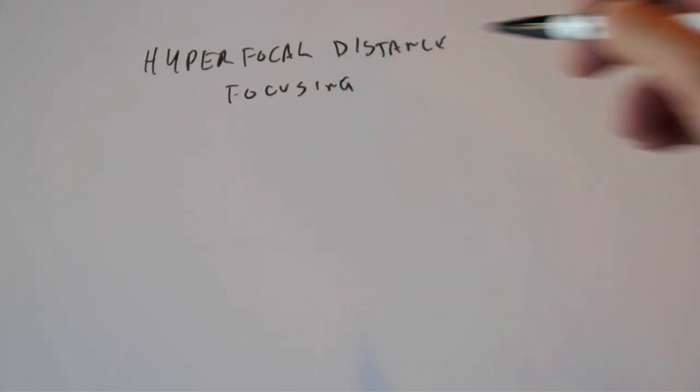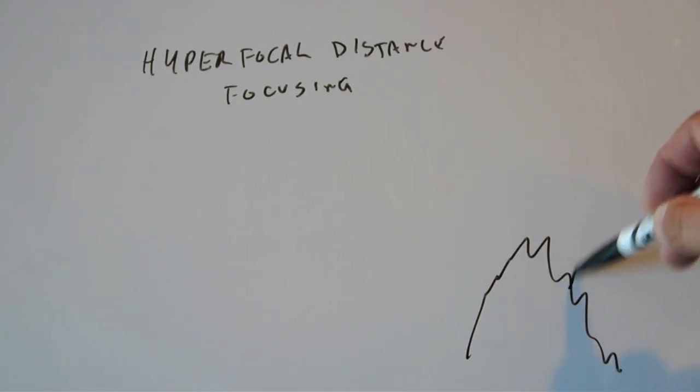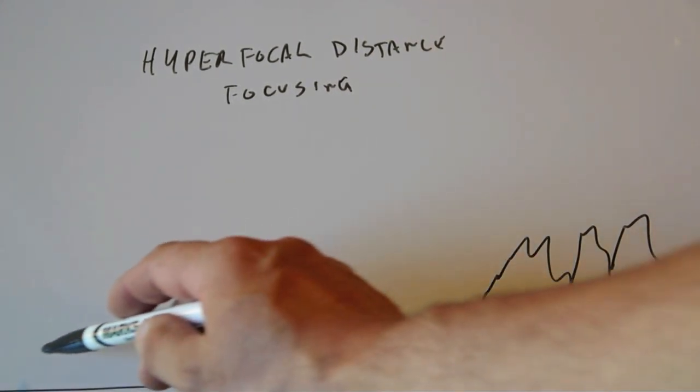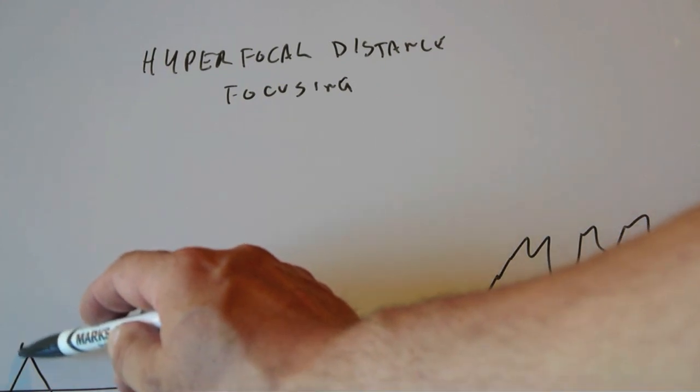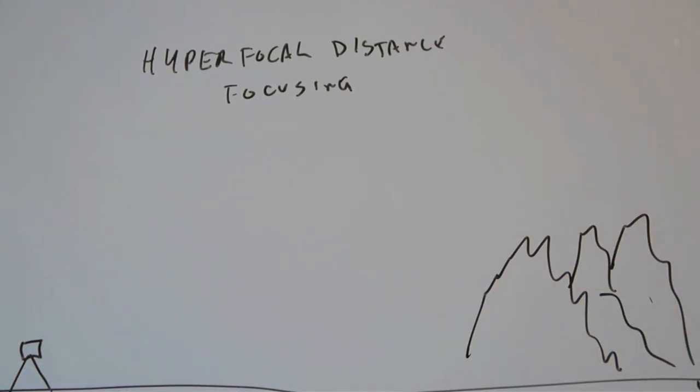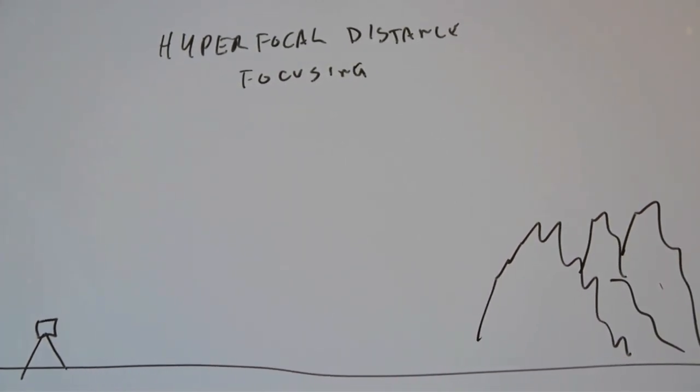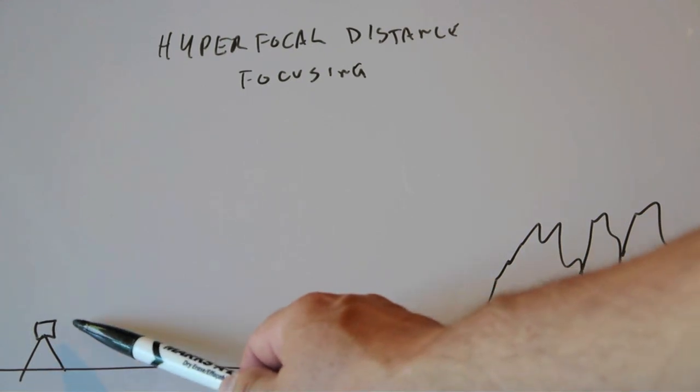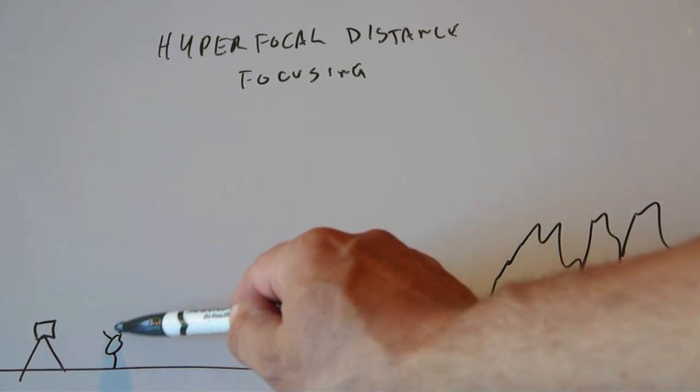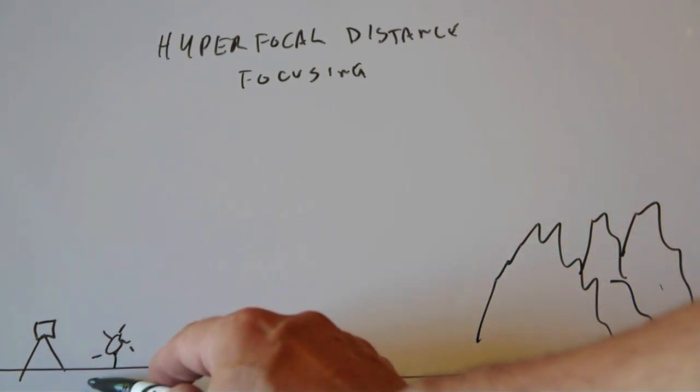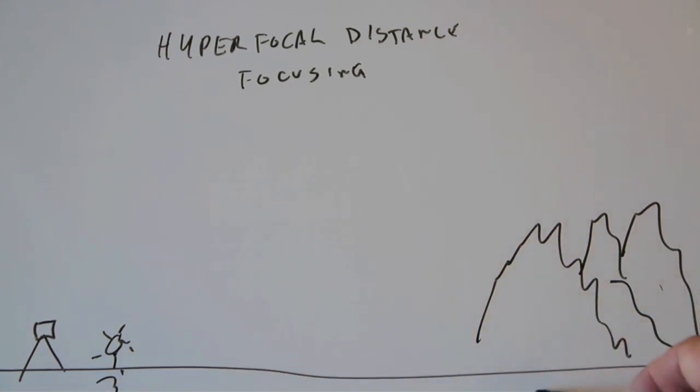Okay. And what that looks like is, so here's your mountains, right? I'm a photographer, not an artist, alright? And so here's your tripod with your camera on top. And what we're saying is, let me move that a little bit. There we go. So what we're saying is, you got a flower here, right? And you want, and the flower is at like, let's say three feet away from your camera.